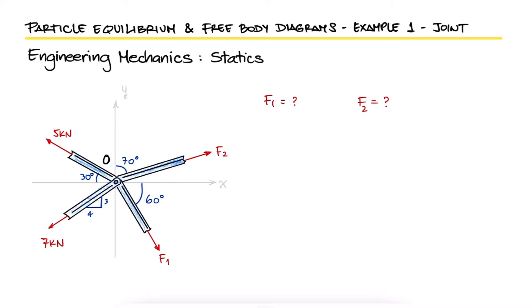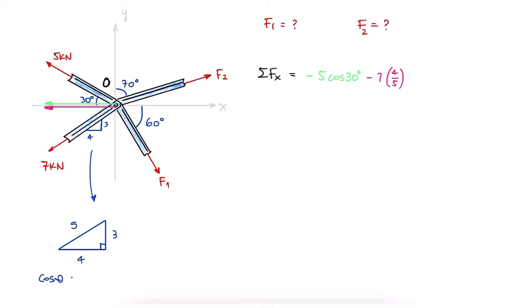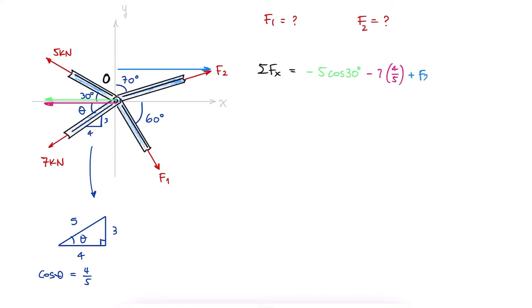Since all the angles are given, or at least the slope of the orientation of every vector, it makes sense to use the unrotated xy frame of reference, as some forces in the x-direction would have negative values for the 5 and 7 kN forces, and positive values for the x-components of F1 and F2.